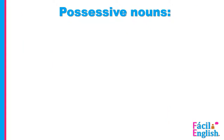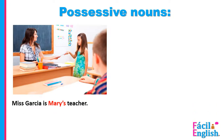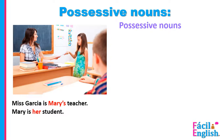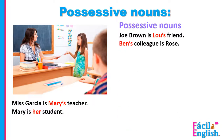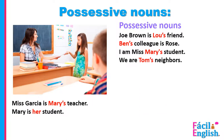Possessive nouns. Miss Garcia is Mary's teacher. Mary is her student. Joe Brown is Lou's friend. Ben's colleague is Rose. I am Miss Mary's student. We are Tom's neighbors. They are Raul's classmates.